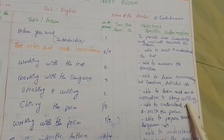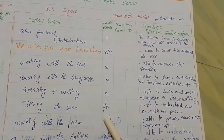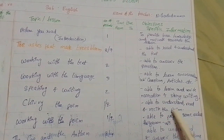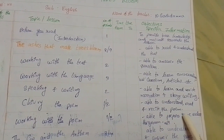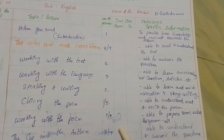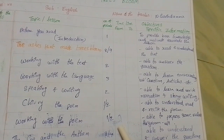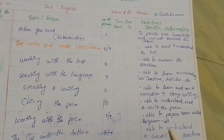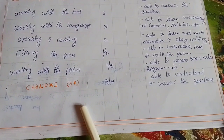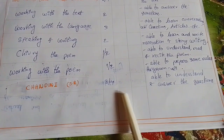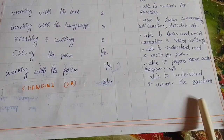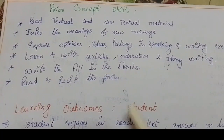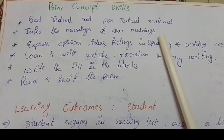In speaking and writing we need two periods for students to learn and write narration and story writing. For the poem we need one to two periods for students to understand, read and recite it. Working with the poem needs two periods for students to prepare some rules for grown-ups. For supplementary reader Chandini we need three to four periods to understand and answer the questions.